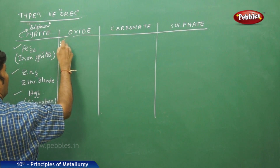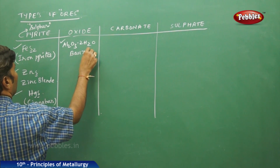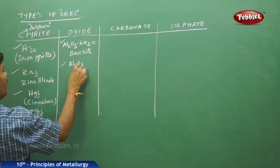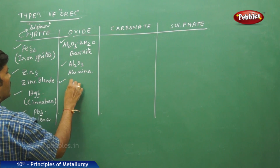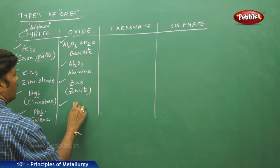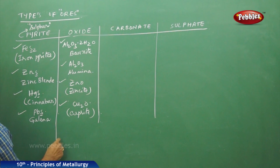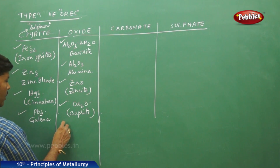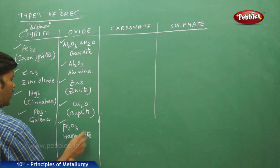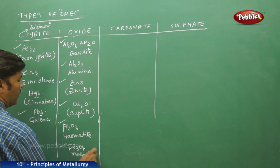For oxide mineral ores, there are plenty of examples: Al2O3·2H2O is bauxite, a hydrated oxide; Al2O3 is alumina; ZnO is zincite; Cu2O is cuprite; Fe2O3 is hematite; and Fe3O4 is magnetite.